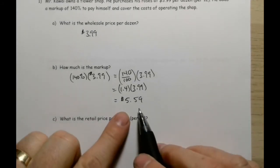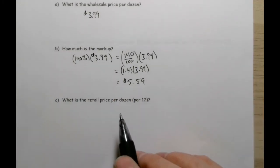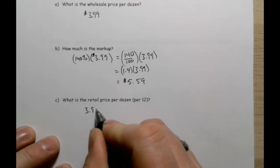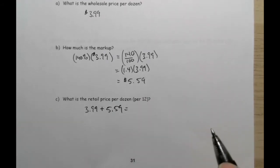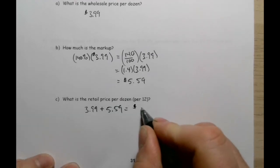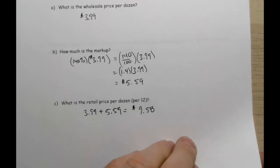Now, that's not how much he's charging - that's the markup. So what's the retail price per dozen roses? Well, that's going to be the wholesale price plus the markup. So $5.59 plus $3.99, and he is going to charge his customers $9.58 per dozen roses. And I know that might look like a lot of extra money, considering he only paid $3.99, but he's got bills to pay too, and he wants to make a bit of a profit on that. That's the way the system works.